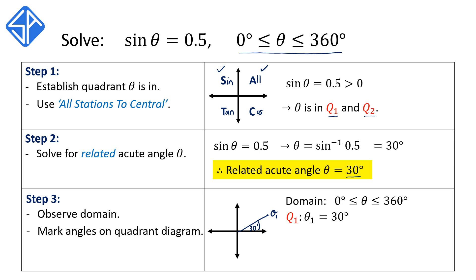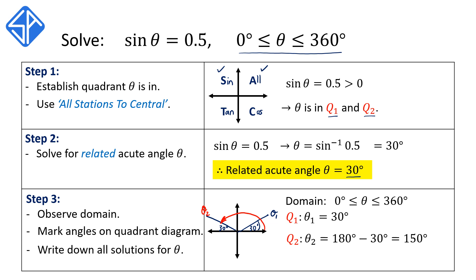So our solution in Q1 is 30 degrees. Our next solution is in Q2, so we're going to mark the ray, with the related acute angle of 30 degrees between the ray and the horizontal. Our second solution in Q2 is going to be the angle marked in red, and that corresponds to 180 minus 30, or 150 degrees. Therefore, theta is equal to 30 degrees or 150 degrees.